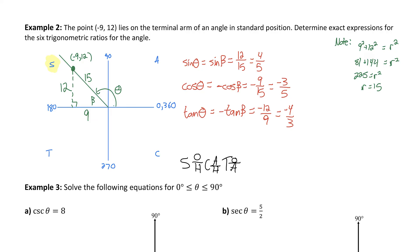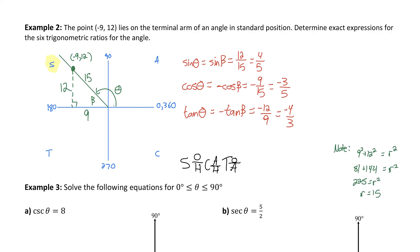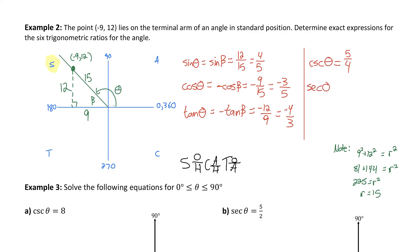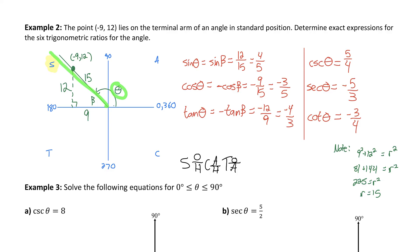Those are the three primary trig ratios. The question wants all six, so now we need the reciprocal ratios. Cosecant of theta is 1 over sine of theta, so 1 over 4 over 5, which flips to 5 over 4. Secant of theta is 1 over cosine of theta, so 1 over negative 3 over 5 — that flips to negative 5 over 3; the sign doesn't change, just the fraction flips. And cotangent of theta is the reciprocal of the tan ratio, so it becomes negative 3 over 4.